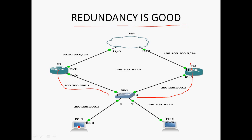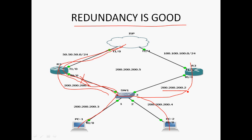In PC1, I can assign the default gateway as 200.200.200.1, and in PC2 also I can assign the default gateway as 200.200.200.1. Now PC1 and PC2 communicate to ISP through R2 router. If the R2 router fast ethernet 0/0 link goes down, PC1 and PC2 cannot communicate to ISP through R2. So we go to PC1 and change the default gateway to 200.200.200.2, and PC2 also we change the default gateway to 200.200.200.2.